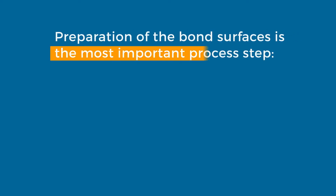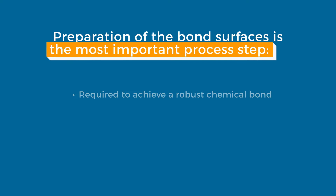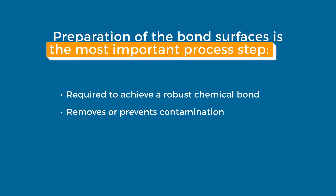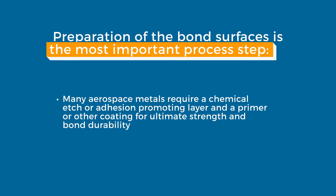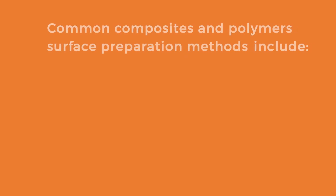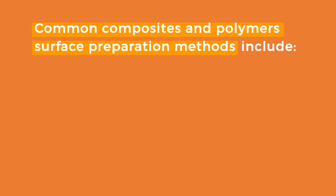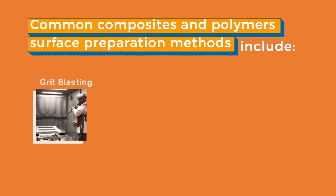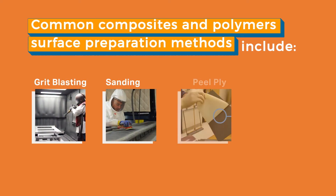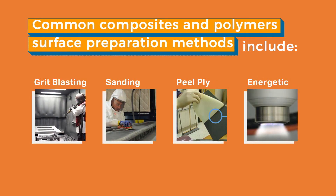Preparation of bond surfaces is the most important process step. It is required to achieve a robust chemical bond, removes or prevents contamination, and creates chemically active sites on the surface. Many aerospace metals require a chemical etch or adhesion-promoting layer, and a primer or other coating for ultimate strength and bond durability. Common composite and polymer surface preparation methods include grit blasting, abrasion and sanding, peel ply, and energetic methods.